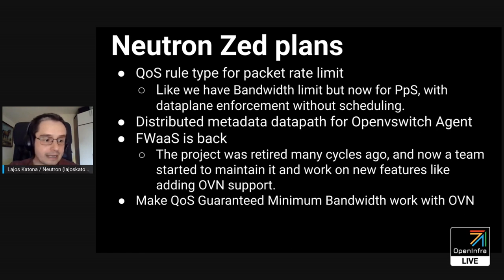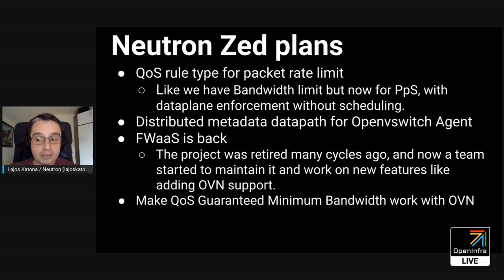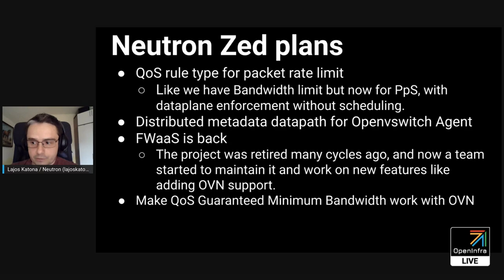Another QoS quality of service thing — it's been a really hot topic in the latest few cycles. The goal is to make the previously mentioned guaranteed minimum bandwidth feature work with OVN, because currently it works only with the OVS and SR-IOV backends. With that, we will have one less gap in the OVN gap list. It's really good to see that we will have more backends which provide the full feature list of Neutron.